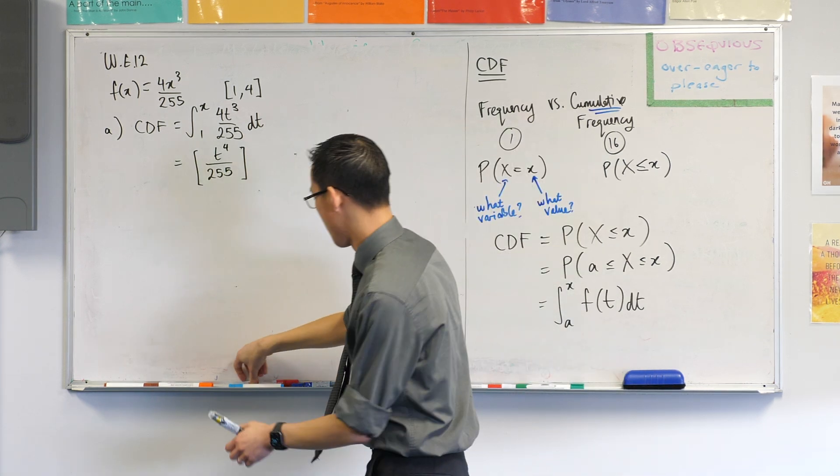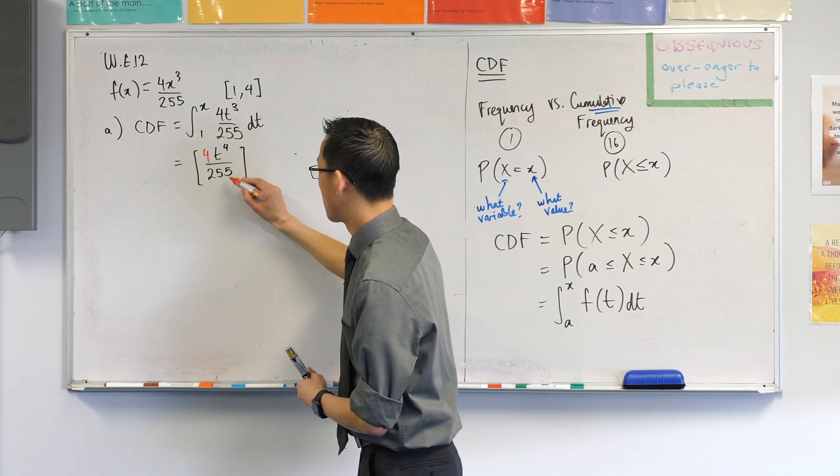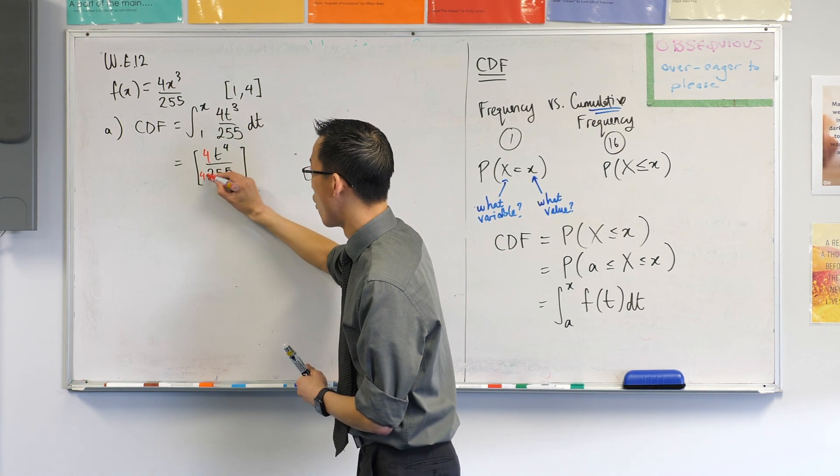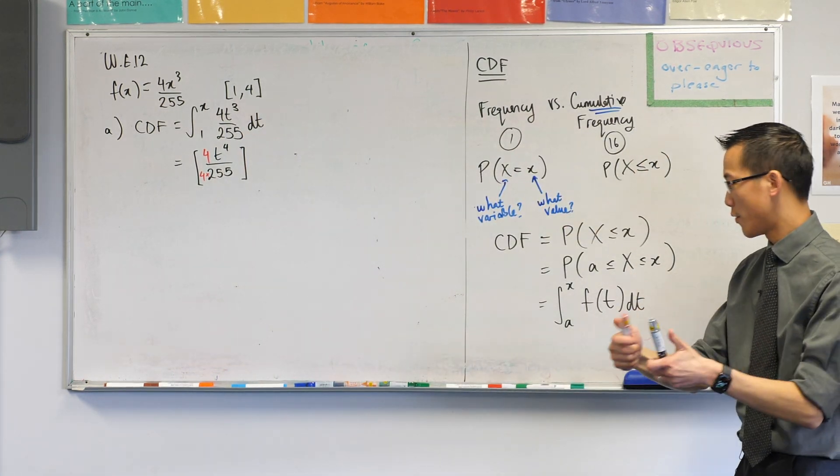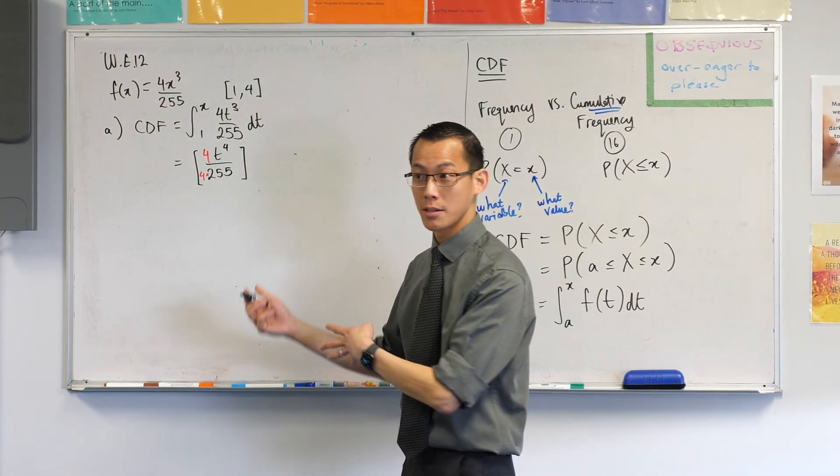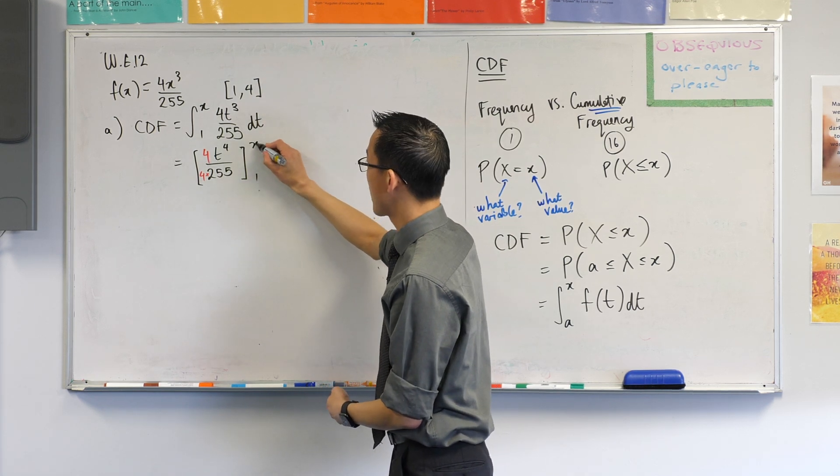Yeah, so in some ways there's an extra bit here. There's the 4 that was there originally, but then I have to divide by 4 when I integrate, so those 4s cancel. All right, so far so good, except I need some boundaries. We already decided the boundaries on the first line, so it's from 1 all the way up to x.